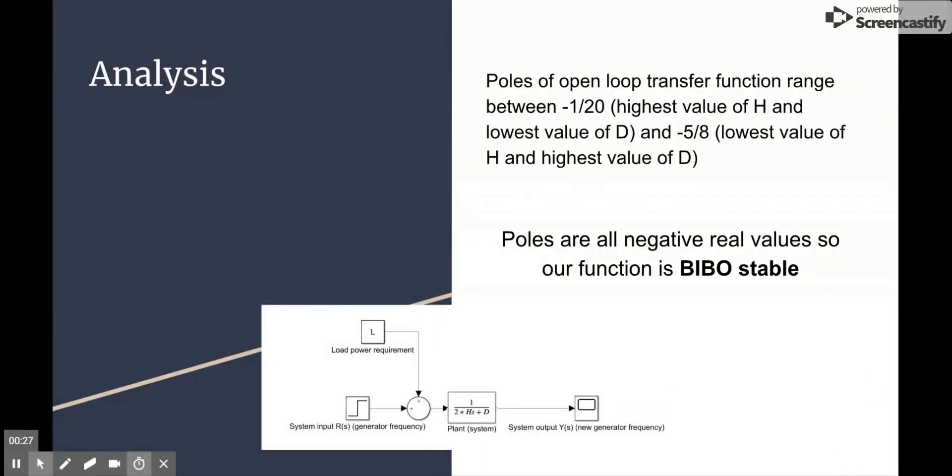If we were to vary the values of H and D in the equation shown for our plant below, to the extremes, we would get a pole at either negative 1 over 20 or negative 5 eighths. Basically this means that no matter what we choose for these parameters, the open loop function is going to have negative real poles, and therefore the function is BIBO stable.